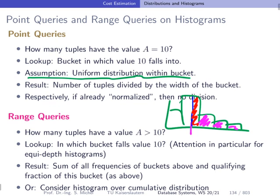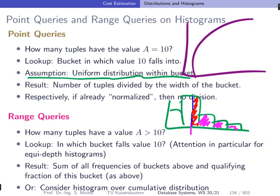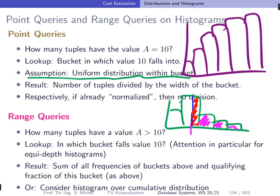Sometimes histograms are built over the cumulative distribution rather than the frequency distribution. The idea is the same. With a cumulative distribution histogram, you sum up frequencies cumulatively, yielding a monotonically increasing shape. Range queries become even easier — you can answer both 'greater than' and 'less than' queries, and even 'between two values' queries directly.